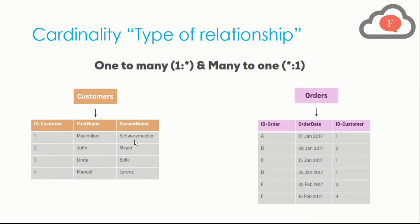The Customer ID is specific and unique in the Customers table, but it is not unique in the Orders table — because values like 1, 2, and 3 repeat in the Orders table. So if we create a relationship between these two tables, we are creating a one-to-many relationship. In the Customers table each Customer ID appears only once, but in the Orders table, when I click on Customer ID 1, there are three orders placed by that customer — meaning Maximilian has ordered three items. This is the one-to-many relationship.